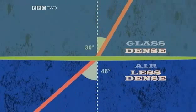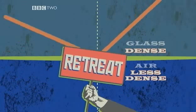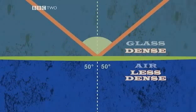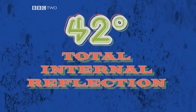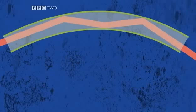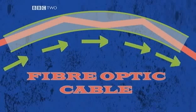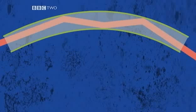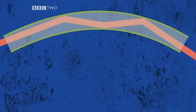Beyond a certain angle the light doesn't cross the boundary — instead it gets reflected back. In glass this critical angle is 42 degrees. It's called total internal reflection and fibre optics rely on it. Very little light is absorbed by the glass which forms the fibre optic cable. Light goes in at one end and travels down the fibre, even around bends. As long as the cables are not bent any tighter than 42 degrees, light will be contained inside the fibre.